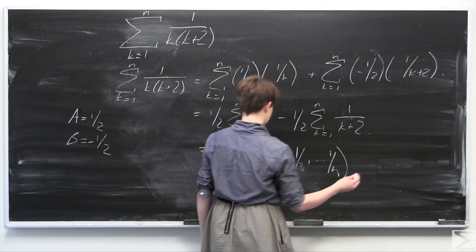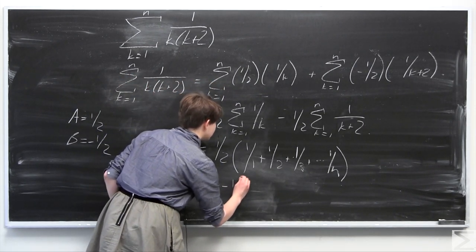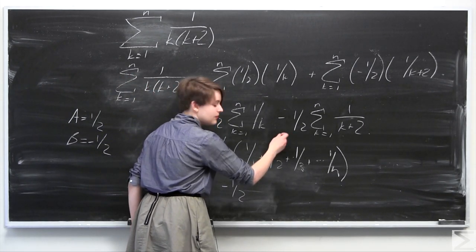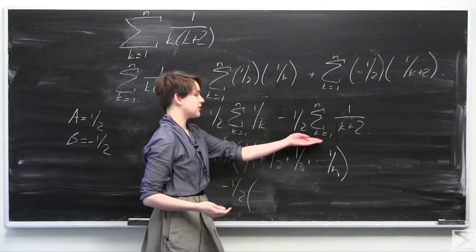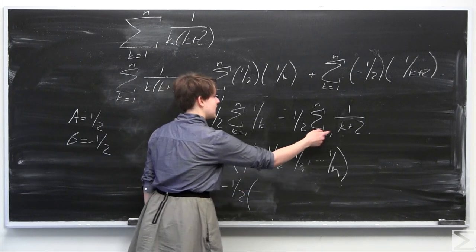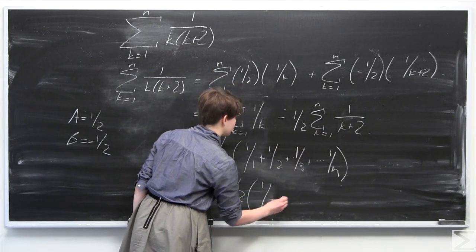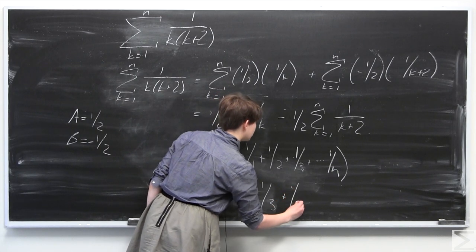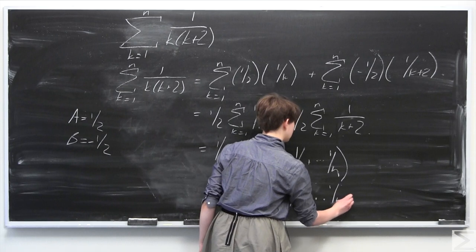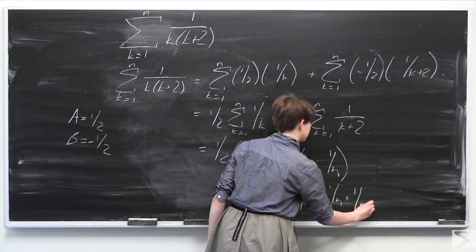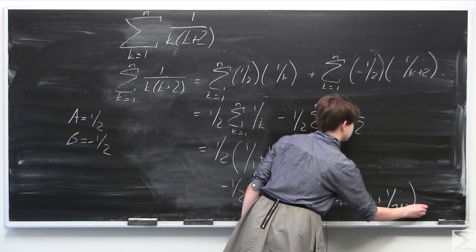For the second sum, negative 1 half times the sum of 1 over k plus 2 from k equals 1 to n: when k equals 1 we get 1 over 3, then 1 over 4, and so on up to 1 over n, plus 1 over n plus 1, plus 1 over n plus 2.